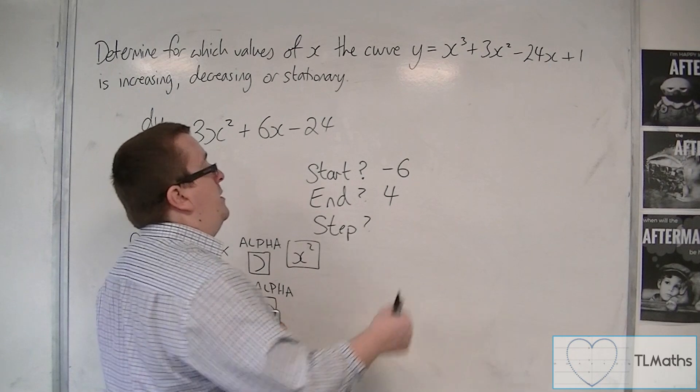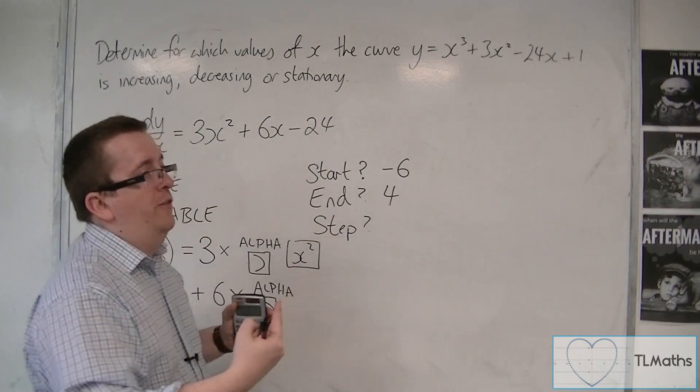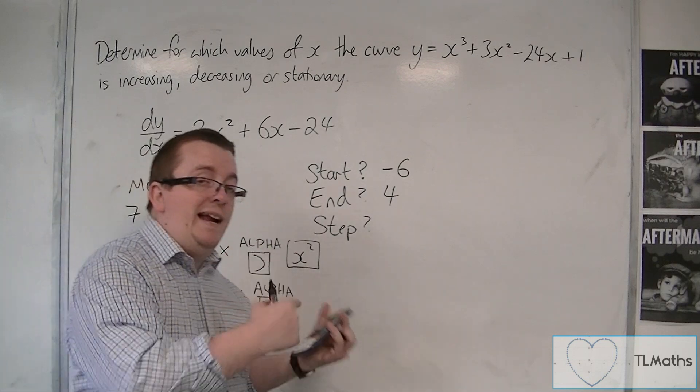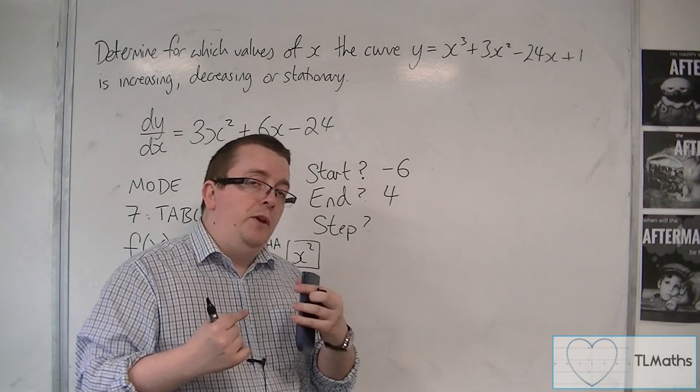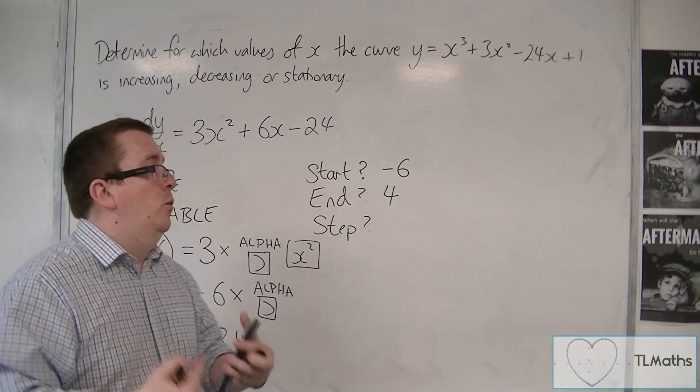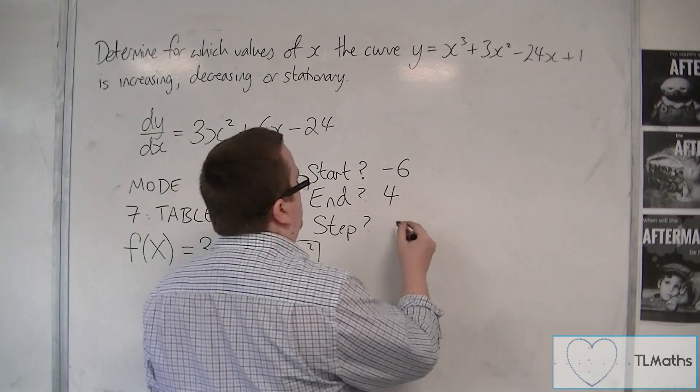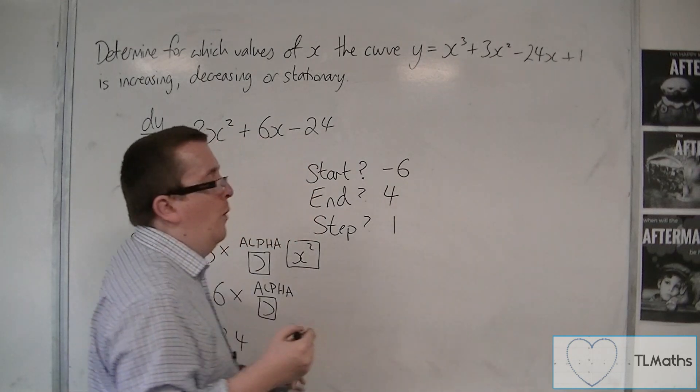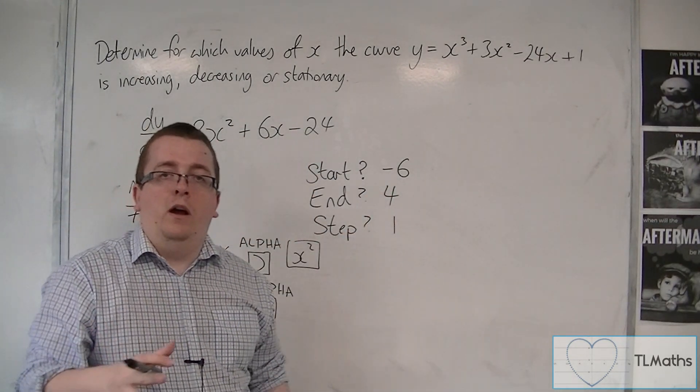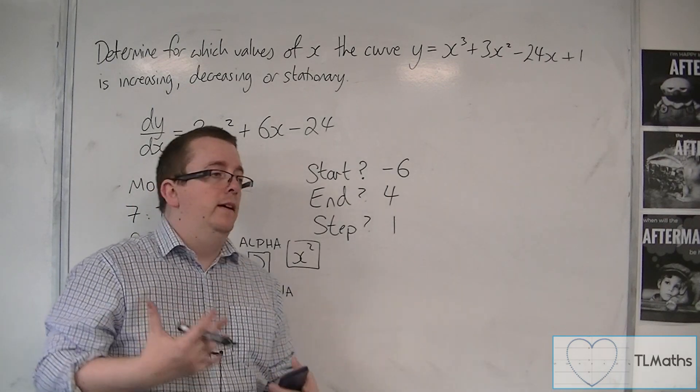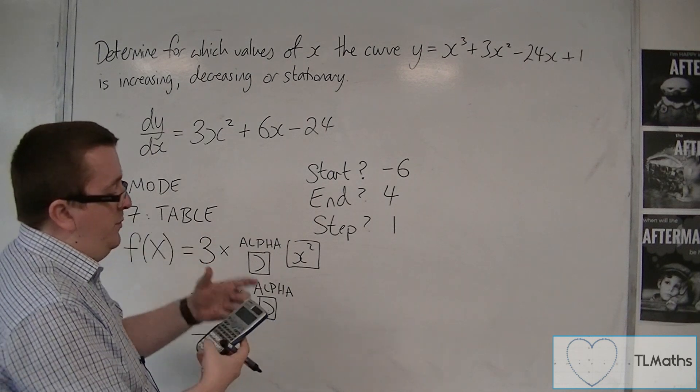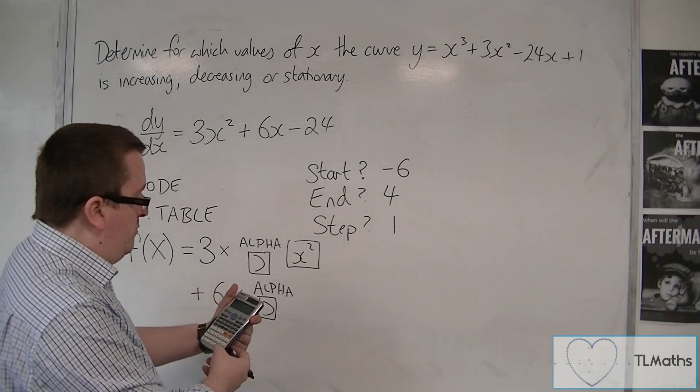Or should I be doing minus 6, minus 5.5, minus 5, minus 4.5, minus 4? So you can tell it to go up in 1s, or you can tell it to go up in 0.5s, or 0.1s, whatever you need. So I would probably suggest at this point just to go up in 1s. Now a lot of this is really down to you getting used to the calculator and knowing what you're working with. So I'm going to continue with the calculator. It already says 1, so I'm just going to press equals.